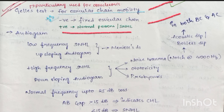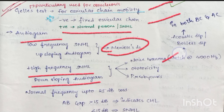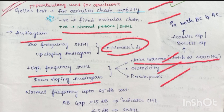Next, let us see the audiogram. Low frequency sensorineural hearing loss with an upsloping audiogram is seen in Meniere's disease. High frequency sensorineural hearing loss with a downsloping audiogram is seen in noise trauma, ototoxicity, and presbyacusis. In noise trauma, we see a notch at 4000 Hz.